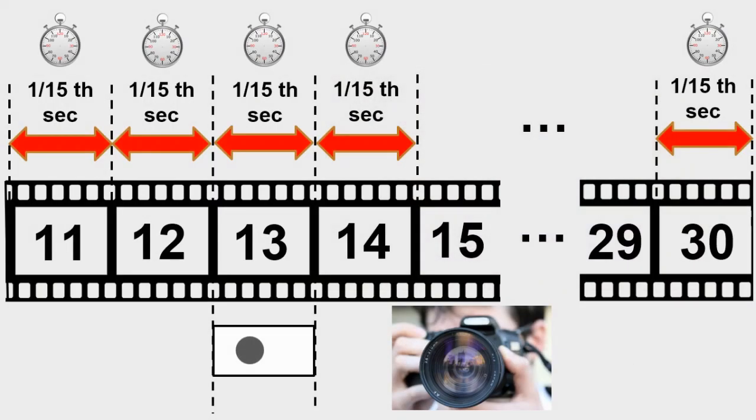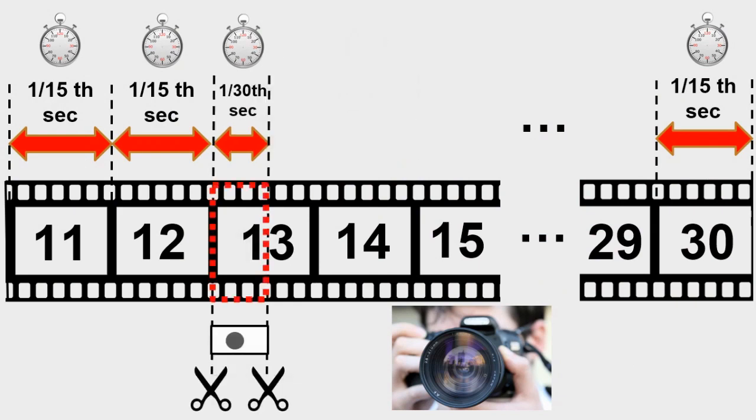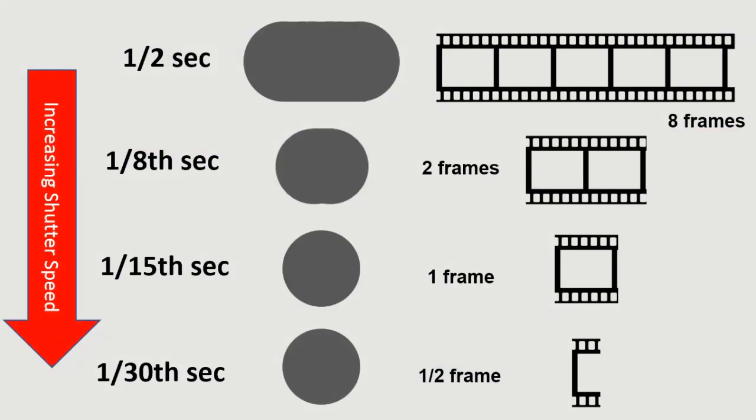But one thing I didn't mention yet is that instead of going slower with shutter speed, what if I went faster than 1/15th of a second? Let's say 2 times faster at 1/30th of a second, which is equivalent to cutting half a frame out. Well, it would make no difference in the motion of the ball as it's not moving within that frame, as shown here at the bottom.